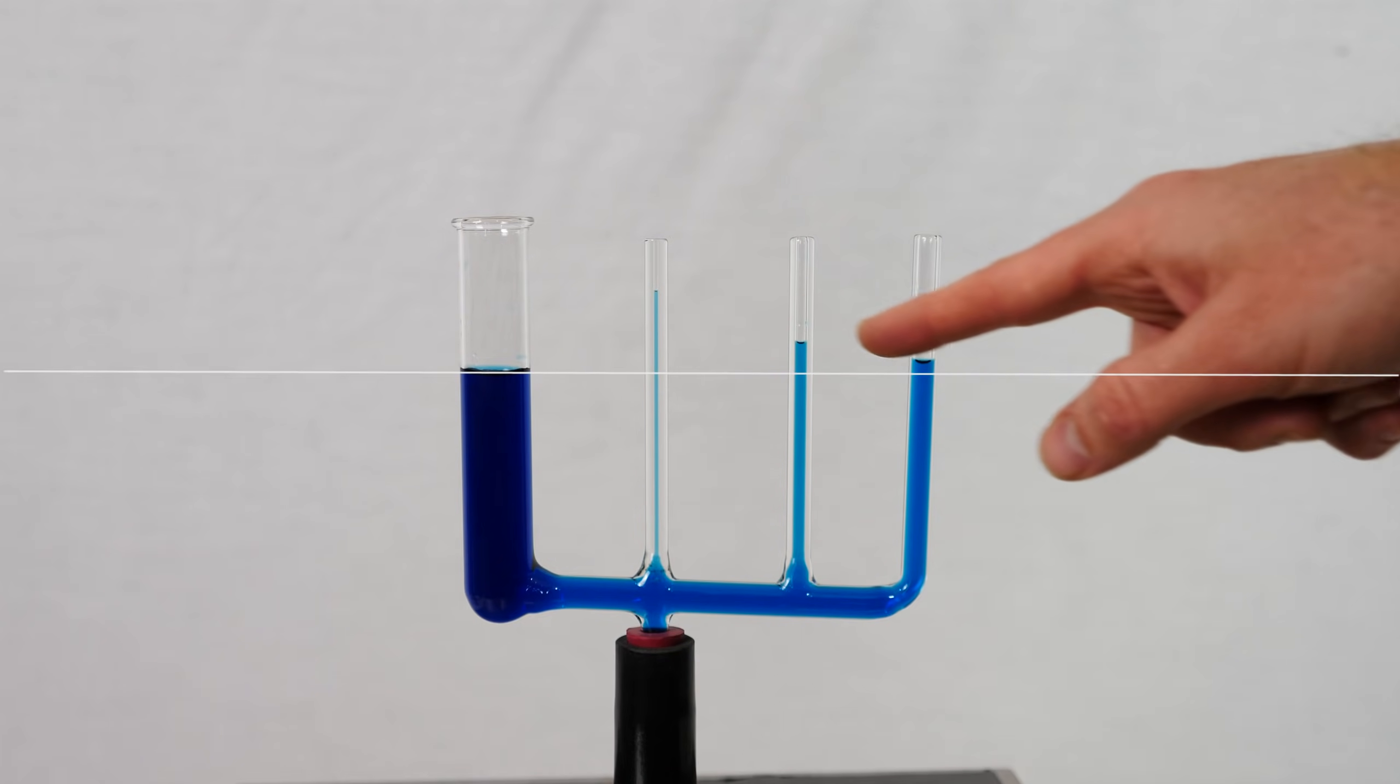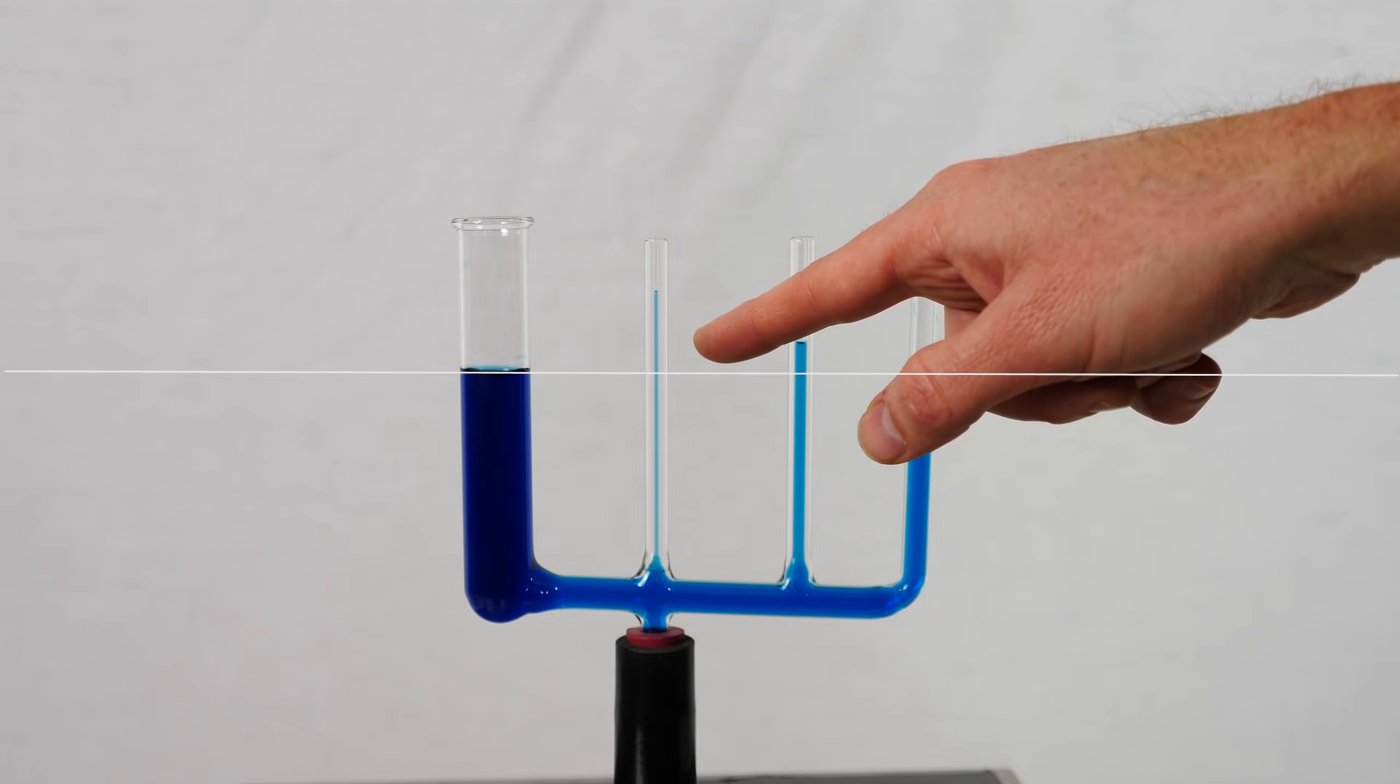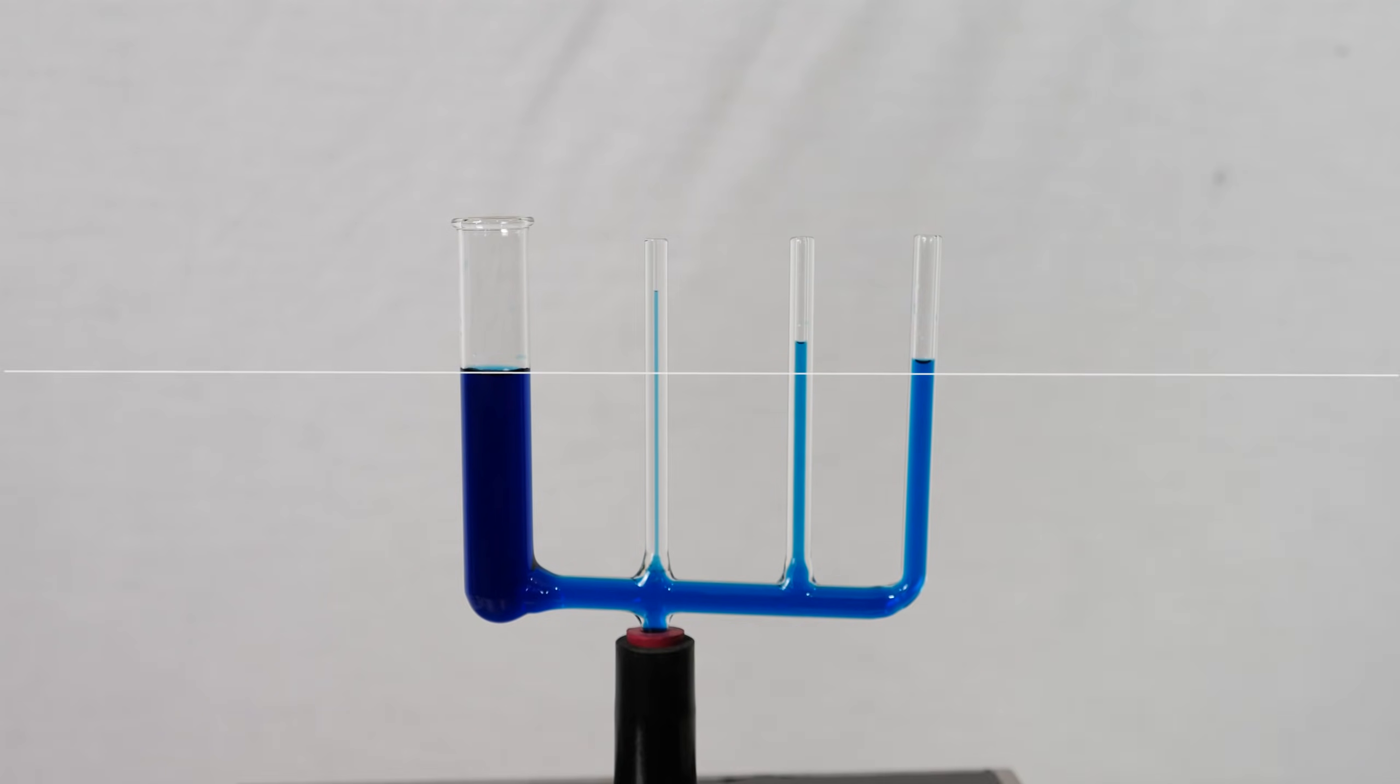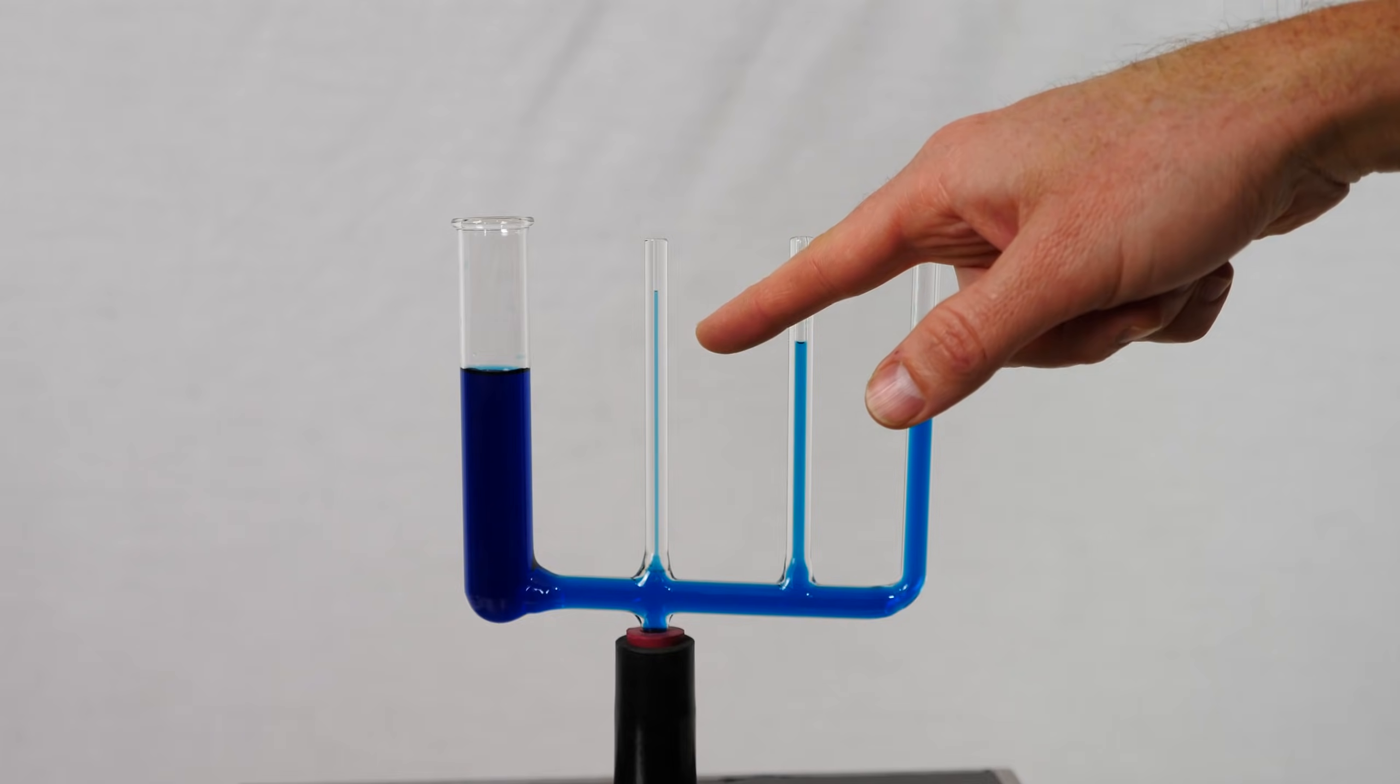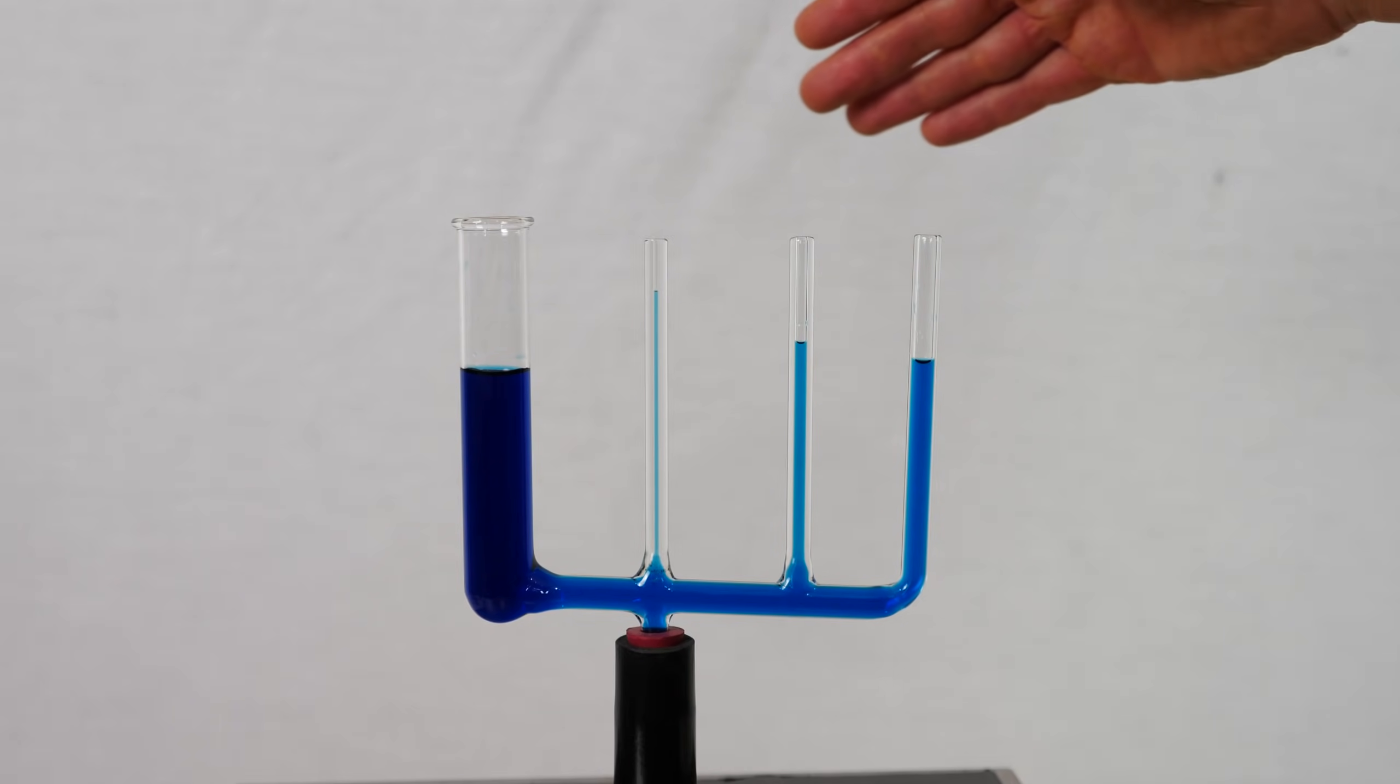And we know that right here, we're already at atmospheric pressure. Well, that would mean if I keep going up, I'm going to get a negative pressure, meaning a slight vacuum in the liquid. So this means that if I were to actually be able to measure this pressure in this small tube here, I would actually get a slight vacuum, a negative pressure relative to atmospheric pressure.